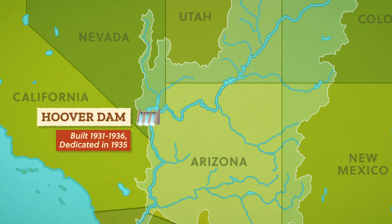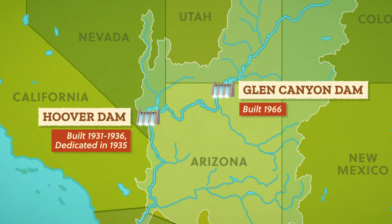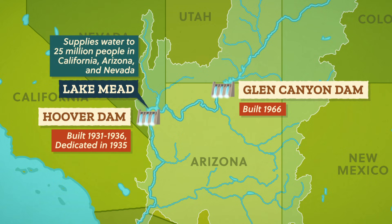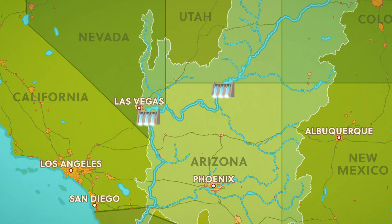Two huge dams — the Hoover Dam on the Arizona-Nevada border and the Glen Canyon Dam in Arizona — were built in the 1930s and 60s to store and hold back water in reservoirs. Lake Mead, the reservoir for the Hoover Dam, supplies water to 25 million people in California, Arizona, and Nevada, and generates hydroelectricity for the region. But all that water still has to be divided between different needs. And since the 1950s, explosive urban growth in upstream states like Phoenix and Las Vegas meant skyrocketing demand for water there, and as a consequence less water for farmers and other rural communities.